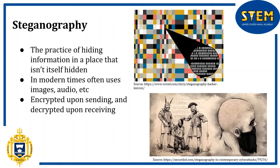Modern steganography generally uses digital media, including text, images, and audio. The hidden information can be injected or substituted into an already existing digital file. Alternatively, a new file can be created to hold the hidden message. In either case, the message is usually encrypted and must be decrypted upon retrieval from the file.